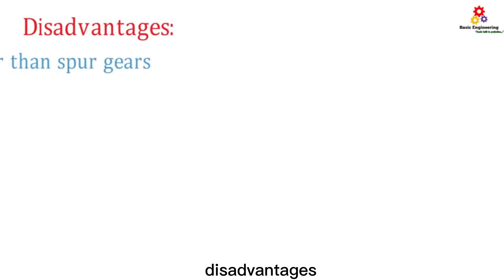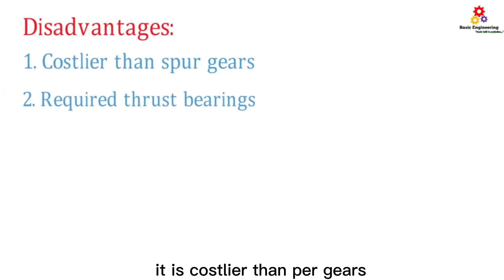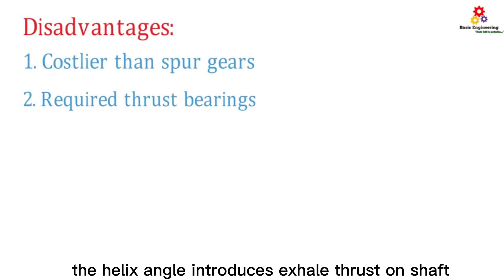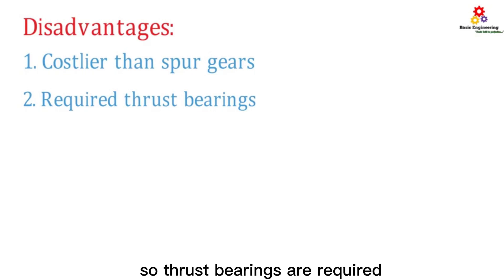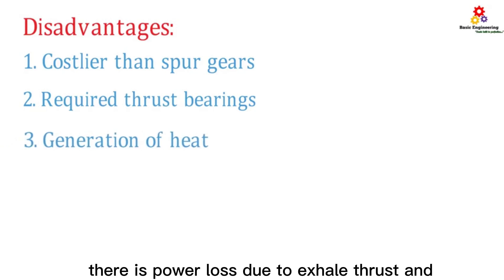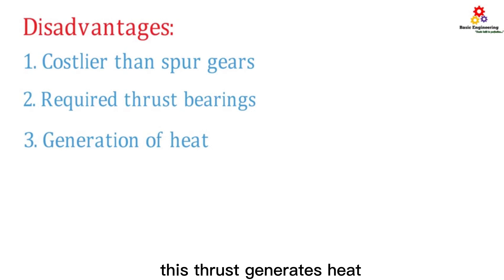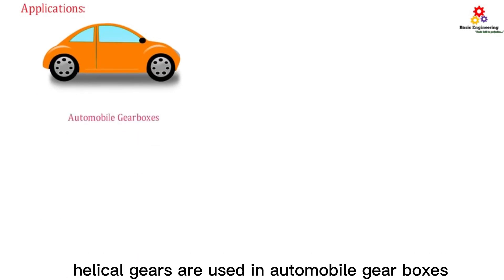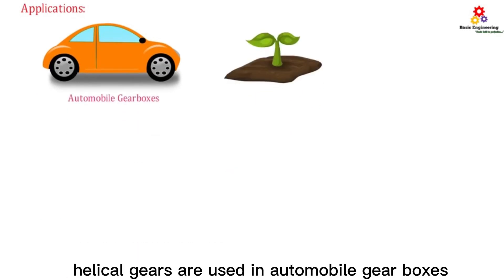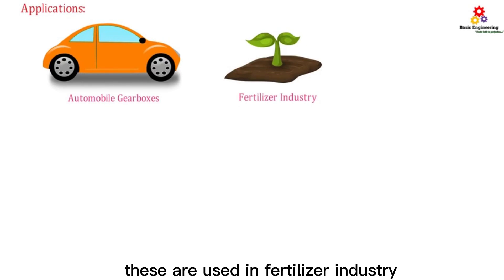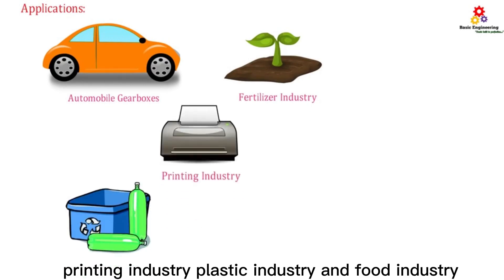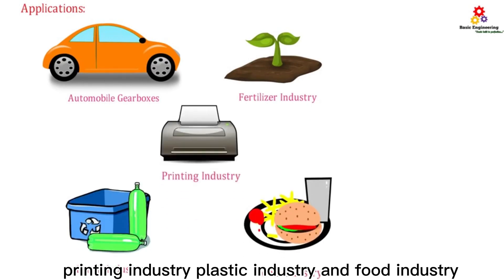Disadvantages: It is costlier than spur gears. The helix angle introduces axial thrust on the shaft, so thrust bearings are required. There is power loss due to axial thrust and this thrust generates heat. Applications: Helical gears are used in automobile gearboxes, and in the fertilizer, printing, plastic, and food industries.